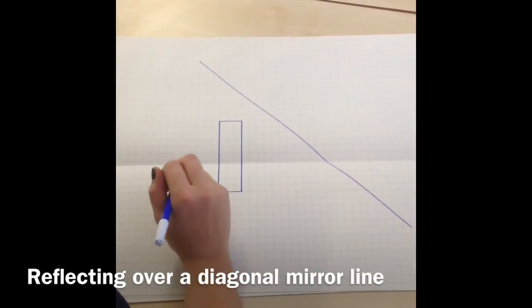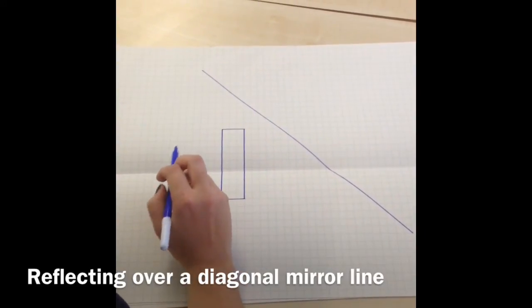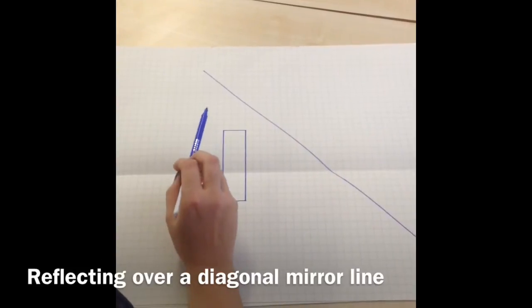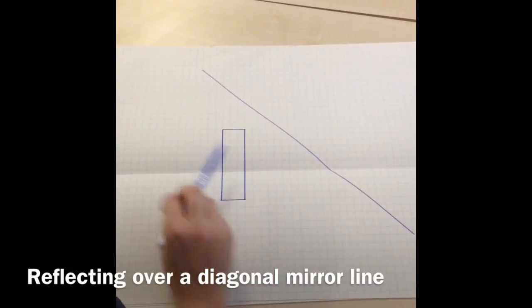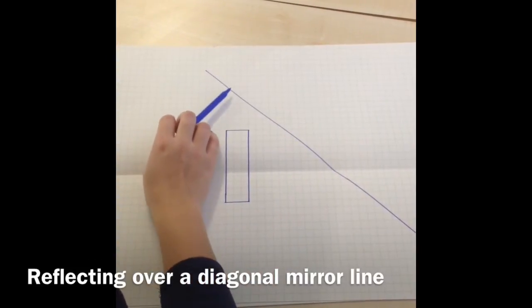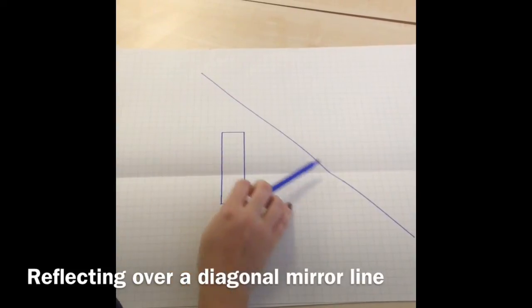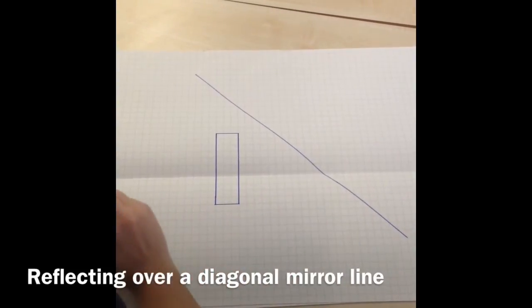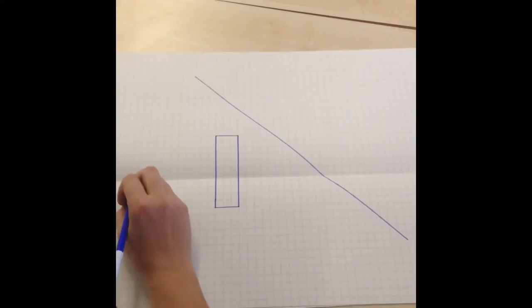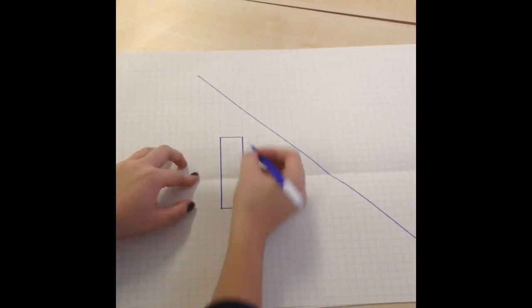So today I'm going to show you how to reflect a shape over a diagonal mirror line. Now as you can see I am using squared paper today and my mirror line is drawn exactly through the middle of my squares and I've drawn a simple rectangle.